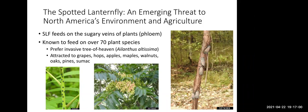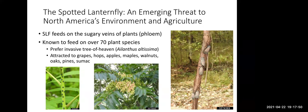While spotted lanternfly prefers tree of heaven, they don't need it to complete their life cycle. They're also highly attracted to grapes, hops, apples, maples — particularly silver maple and red maple — walnuts including black walnut, oaks, pines, sumac, sycamore, birch, and several other host species.